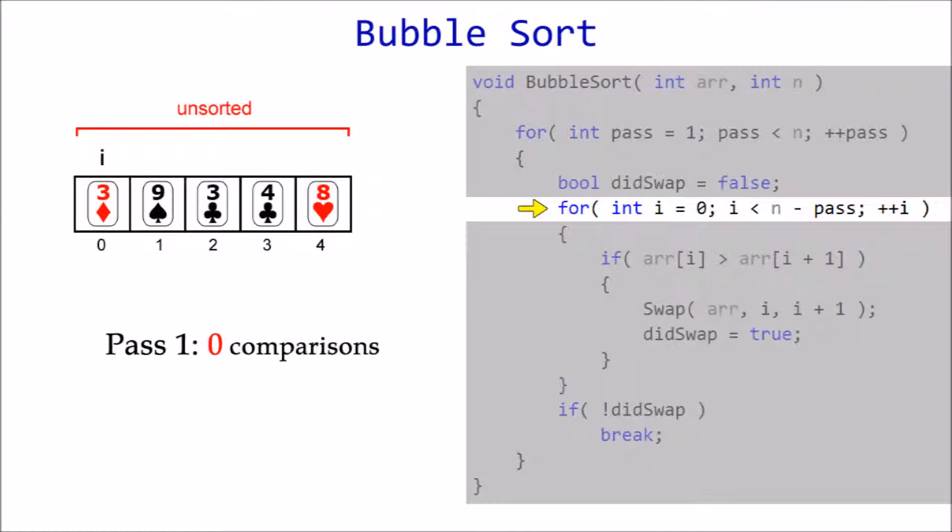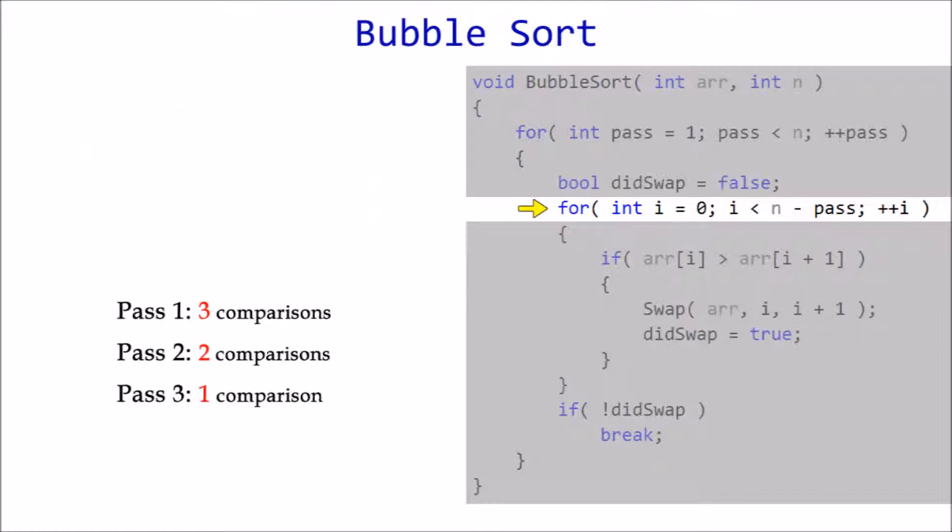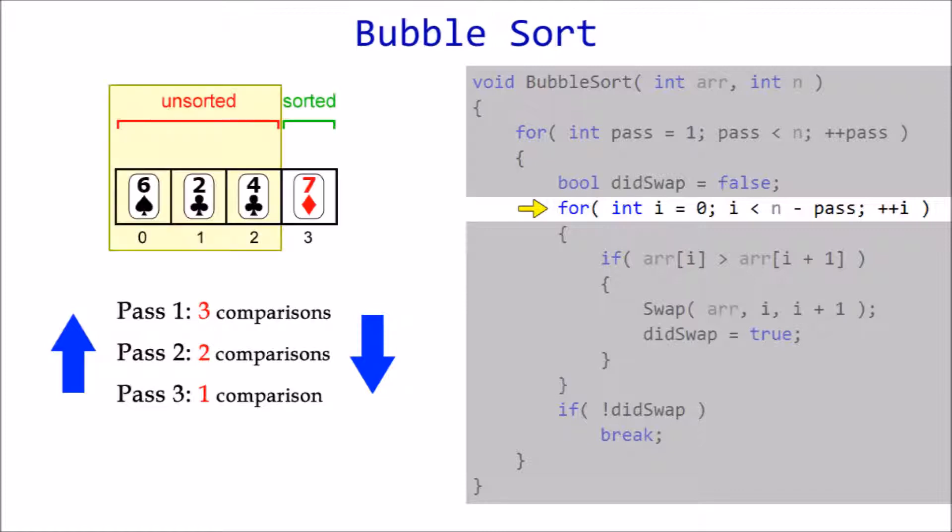Let's review our results from the previous example to understand the logic. From this, we can see that the number of passes and number of comparisons are inversely proportional, which means as the number of passes increases, the number of comparisons decreases. So this loop will run fewer and fewer times, essentially keeping us contained within the unsorted section, since we don't want to waste time reanalyzing any of the sorted elements.